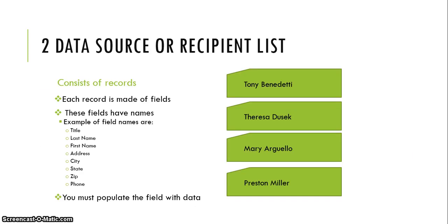Your data source consists of records. Each record is made of fields, and these fields have names. Examples of field names are: title, last name, first name, address, city, state, zip, phone. When you create a data source from scratch, you must populate the fields with data.